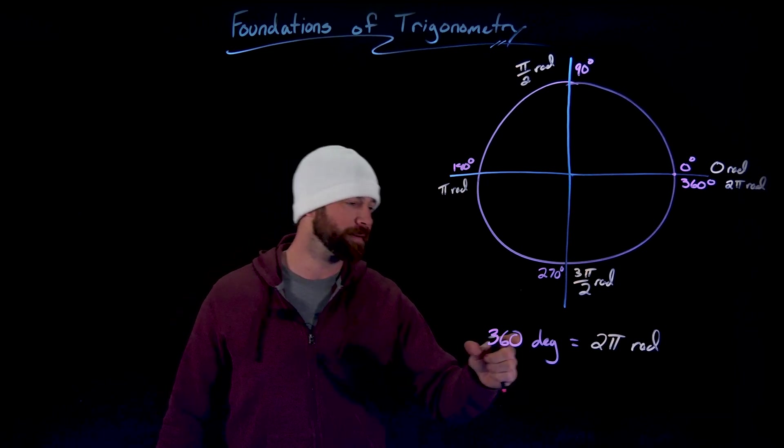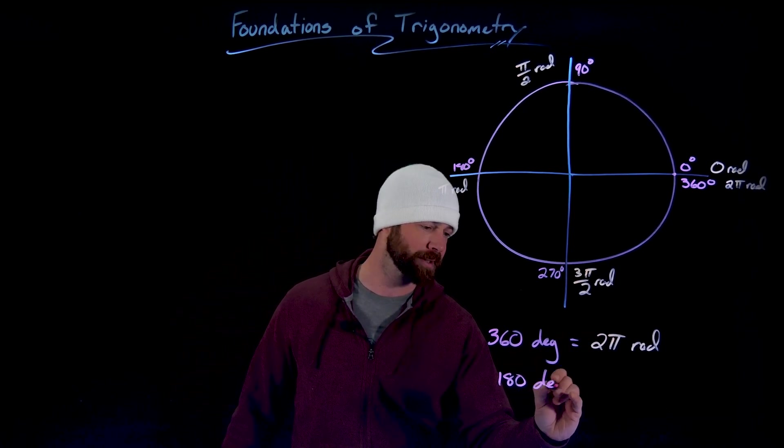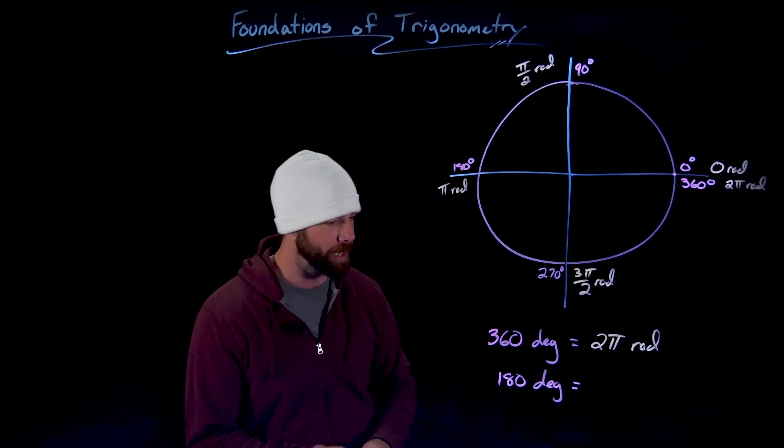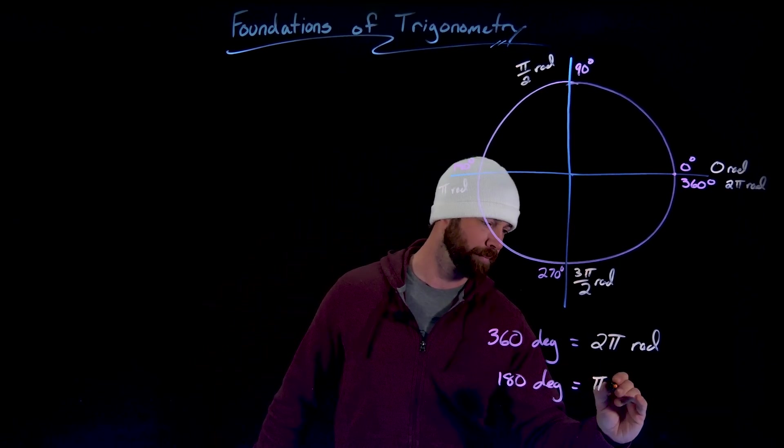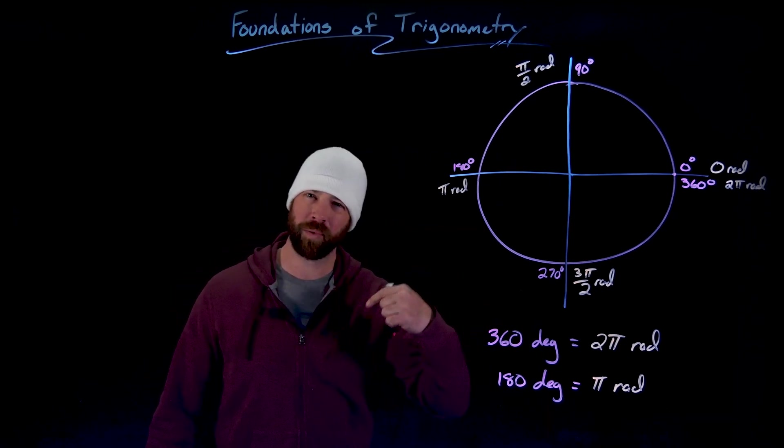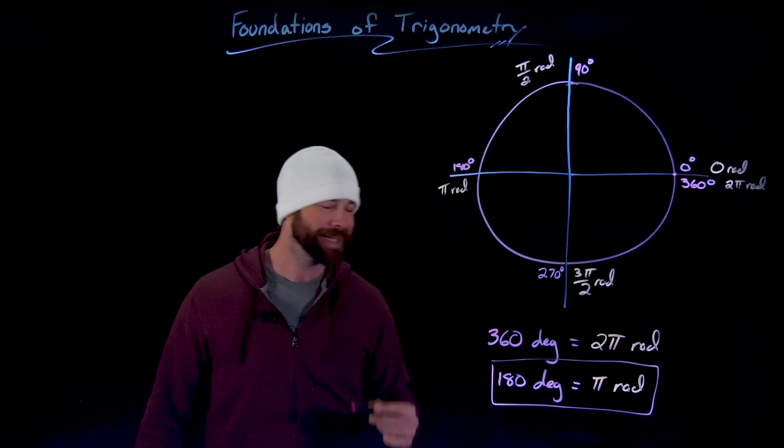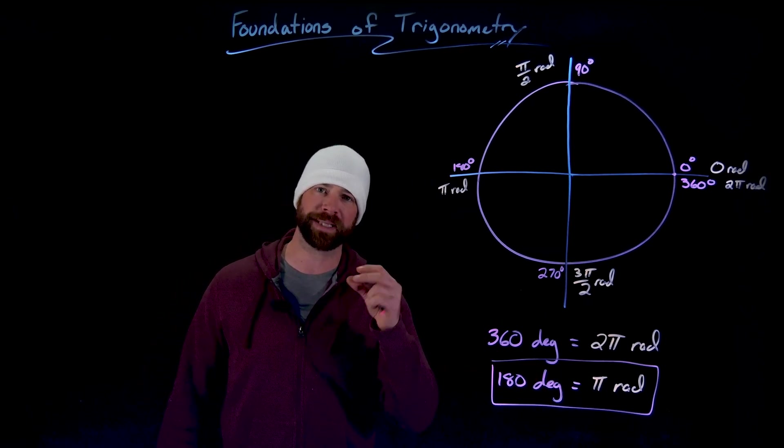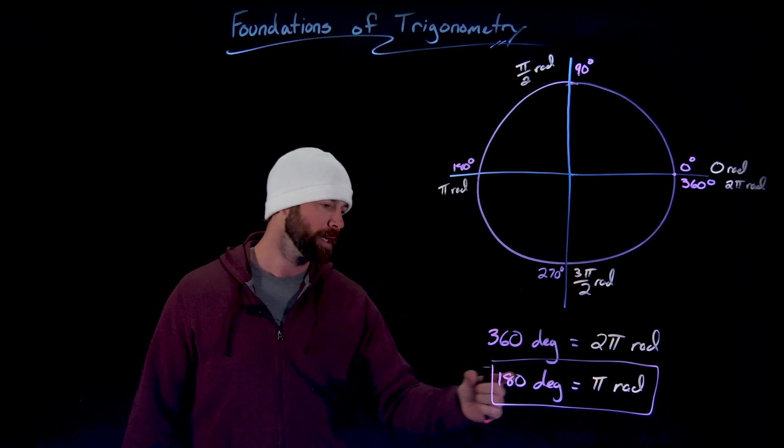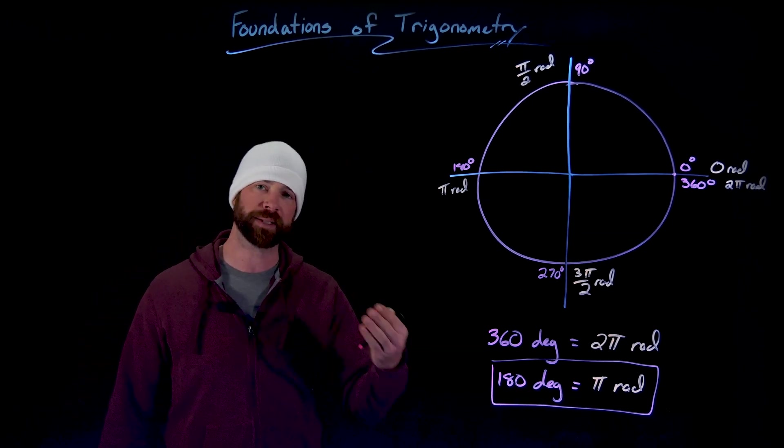Alternatively, if we wanted to, we could divide both sides of this equation by two and say that 180 degrees equals pi radians. And in fact, in the work that I will do, I will use this more reduced version of this. It's just a little bit simpler to use and a little bit less reducing when I'm doing the work. But again, this is the conversion rate in angular measure between degrees and radians.